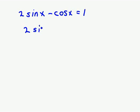So I'll get 2 sine x equals cosine x plus 1 if I add the cosine x to both sides.